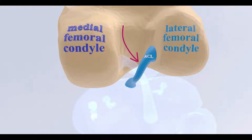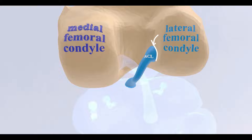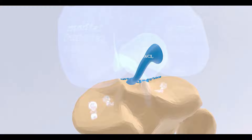The ACL originates from the lateral femoral condyle — specifically, from the medial aspect of the lateral femoral condyle. And it inserts at the intercondylar area of the plateau of the tibia.